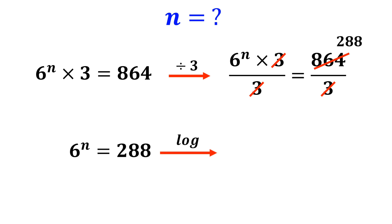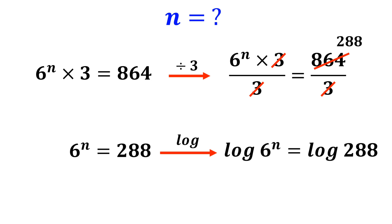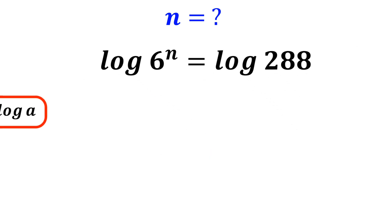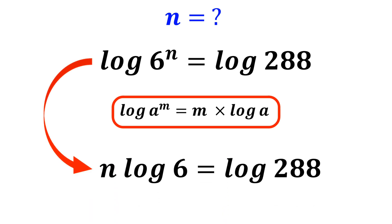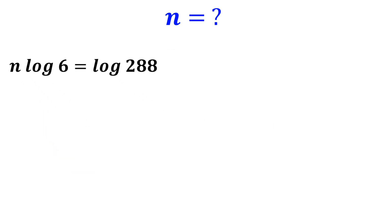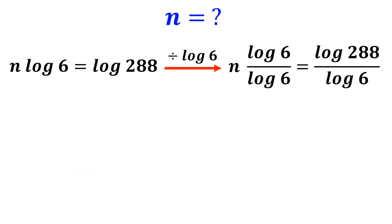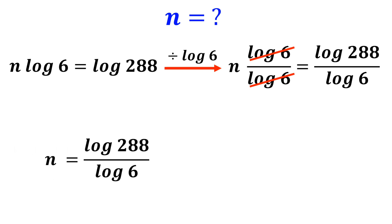Now we take the logarithm of both sides of the equation, so it becomes log of 6 to the power of n equals log of 288. According to the rules of logarithm, log of a to the power of m equals m times log of a. So this expression becomes n times log of 6 equals log of 288. We divide both sides by log of 6, and the log of 6 terms cancel out, simplifying to n equals log of 288 over log of 6.